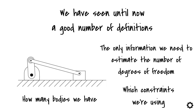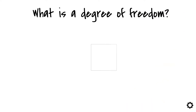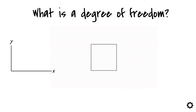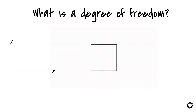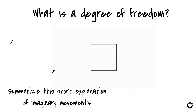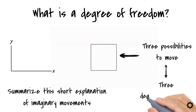But I think we are forgetting something important — what is a degree of freedom? Imagine a planar body with no constraints. If I bring along an inertial system, we all intuitively understand that the body could translate along the x and y axis, and also rotate around an axis perpendicular to the plane. I can summarize this by saying that the body has three possibilities to move, which is equivalent to saying it has three degrees of freedom.